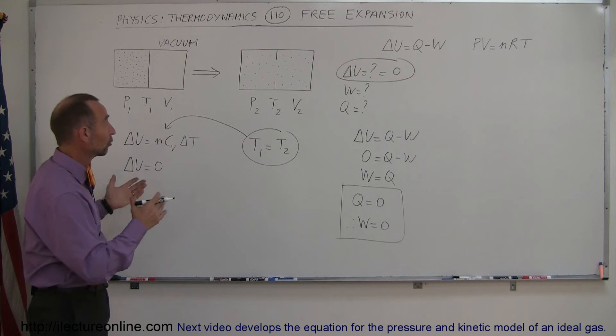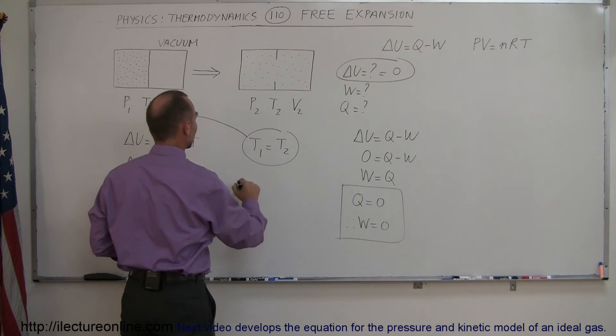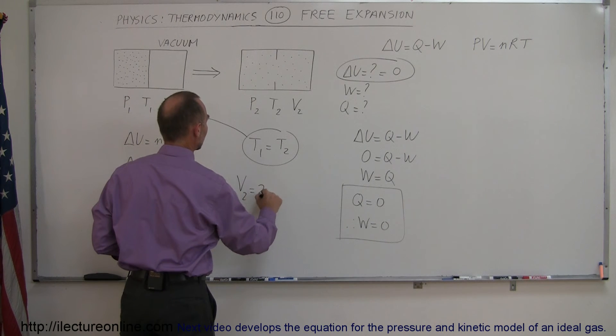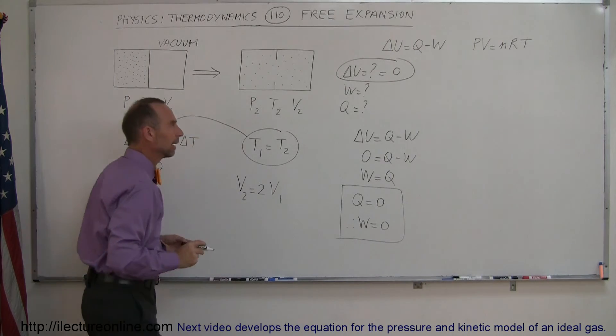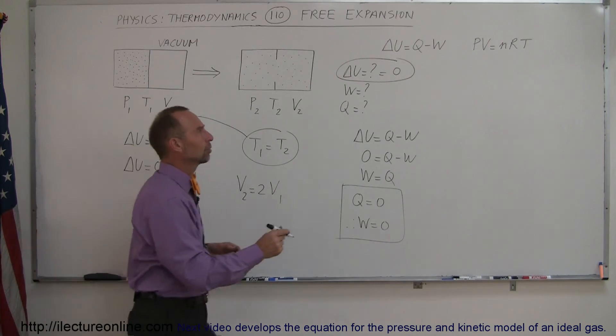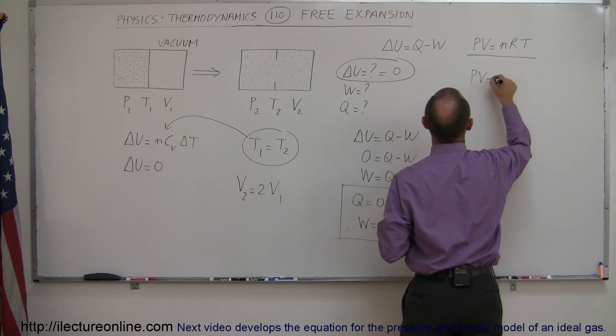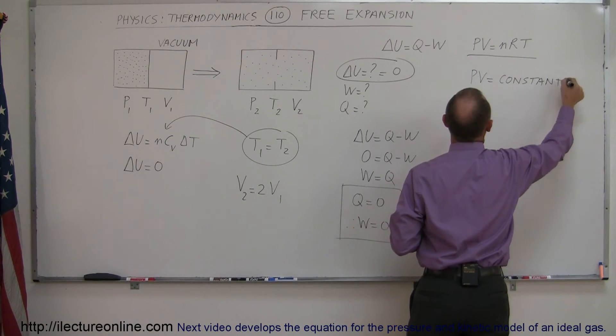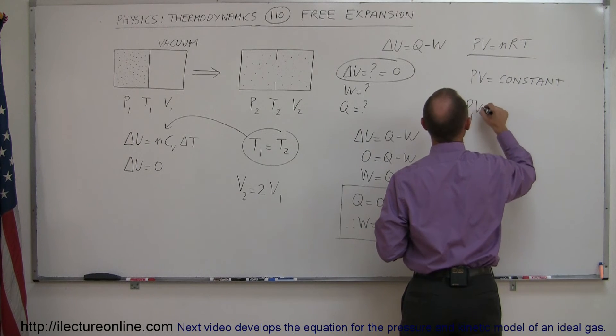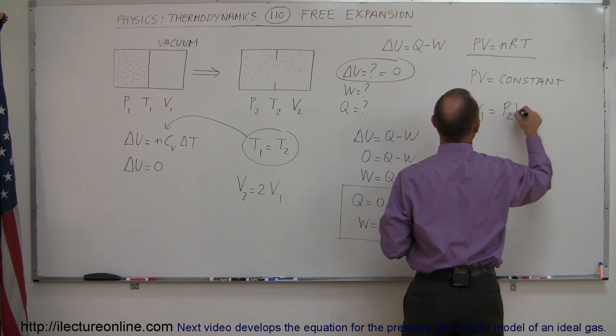Now what does change, of course, is the volume. And what we can say here is that volume 2 is equal to 2 times volume 1. And if that's the case, and we go back to PV equals nRT, and since T stays the same, we can then say that P times V is equal to a constant, which means that P1 V1 is equal to P2 V2.